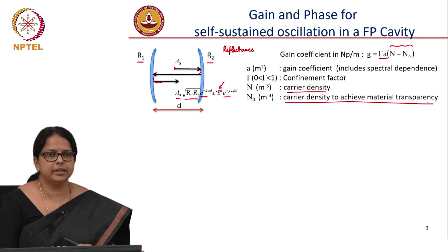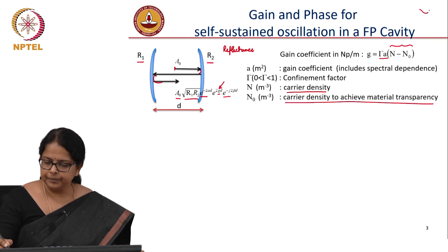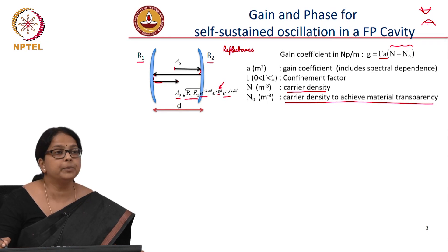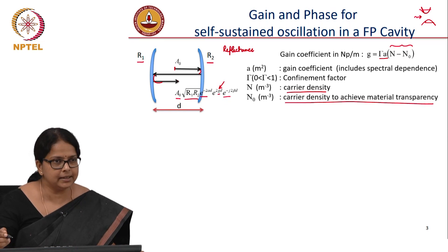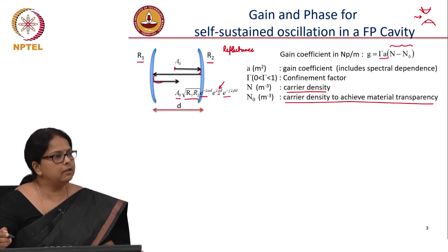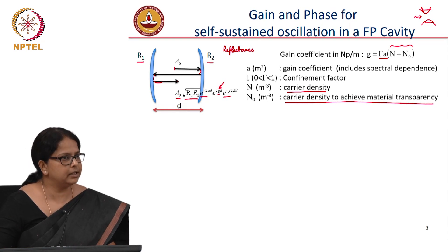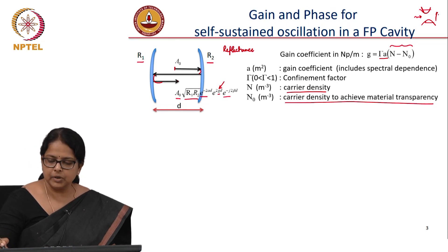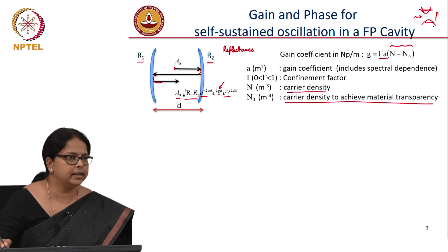What does this mean, material transparency? Again, I am repeating this diagram of valence band and conduction band, the EK diagram. You could have absorptions in the system, which means the incident photon, it is not necessary that the incident photon is always causing stimulated emission. The incident photon can cause an absorption and it can cause an emission only if the carrier density in the upper state is larger than the carrier density in the lower state.